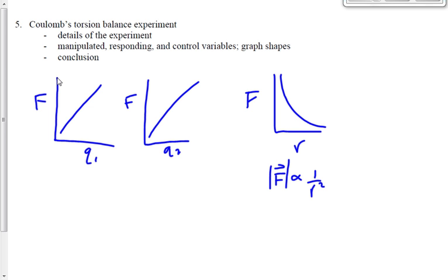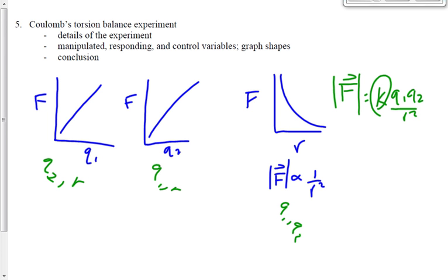Can you tell me what variables I would have kept constant in this first one? If I'm manipulating Q1, seeing what effect that has on F, what variables would I have kept constant? Q2 and R. Here it would have been Q1 and R. Here it would have been Q1 and Q2 that had to be kept constant. Put those three things together: F is related to Q1, F is related to Q2, F is related to 1 over R squared. We get a constant times Q1 Q2 over R squared. And that constant, as we know, is 8.99 times 10 to the 9 newton meters squared per coulomb squared.